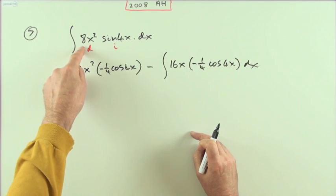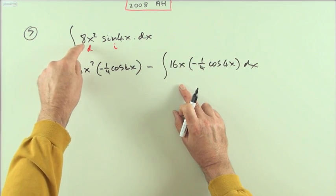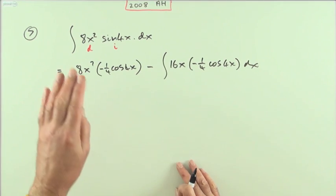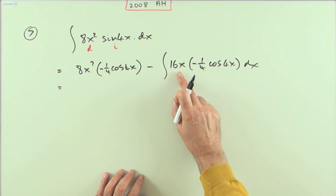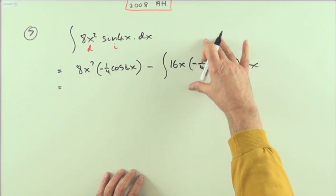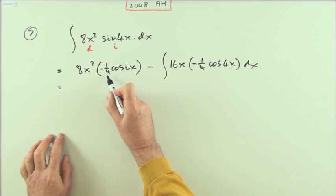Decide which one you're going to differentiate, decide which one you're going to integrate. Here of course you want that to disappear, so I'm differentiating this one. Then you integrate first, this part's an integral. Differentiate that, make it smaller. I've still of course got this integral to do.